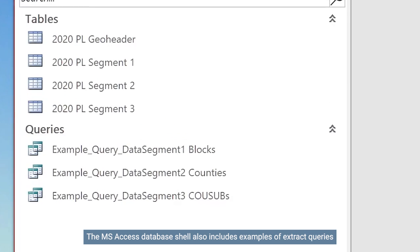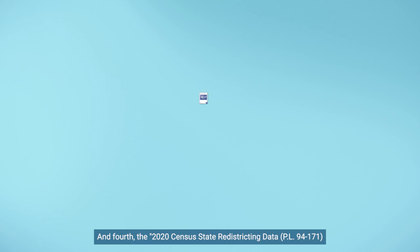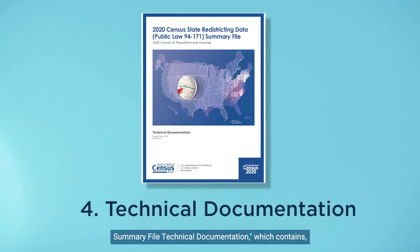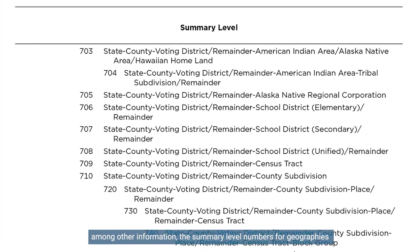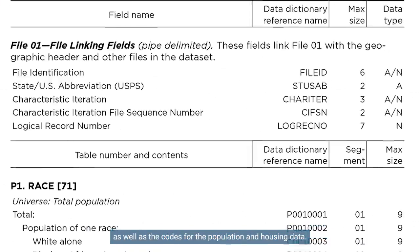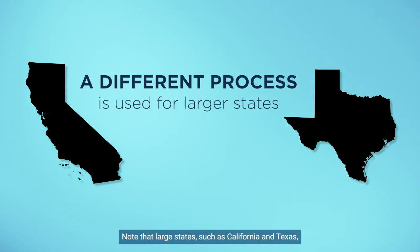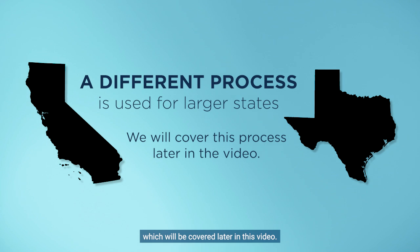The MS Access database shell also includes examples of extract queries for blocks, counties, and county subdivisions. And fourth, the 2020 Census State Redistricting Data PL 94-171 summary file technical documentation, which contains, among other information, the summary level numbers for geographies, as well as the codes for the population and housing data. Note that large states, such as California and Texas, require a slightly different process to access the data, which will be covered later in this video.